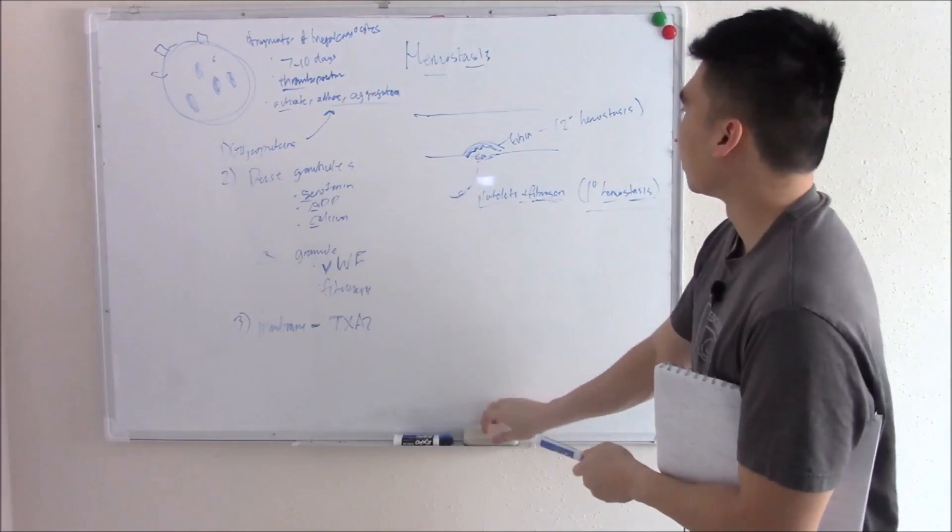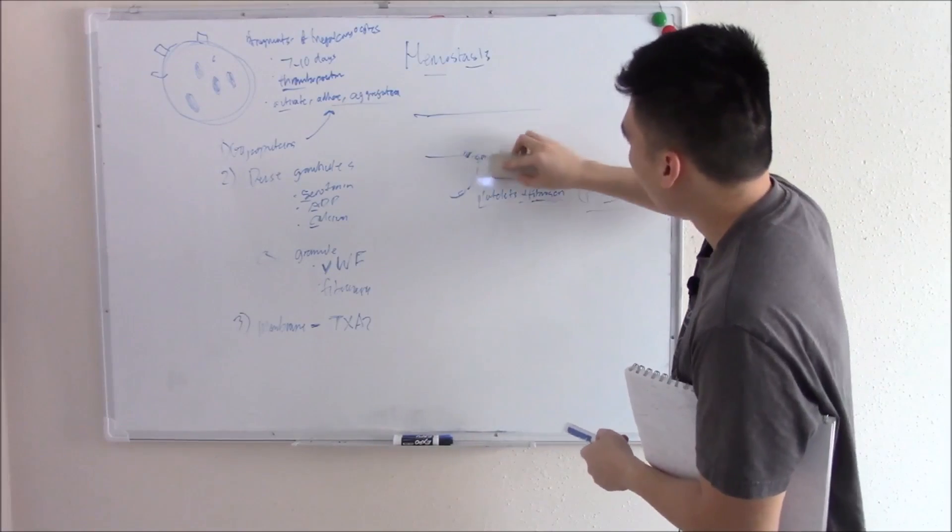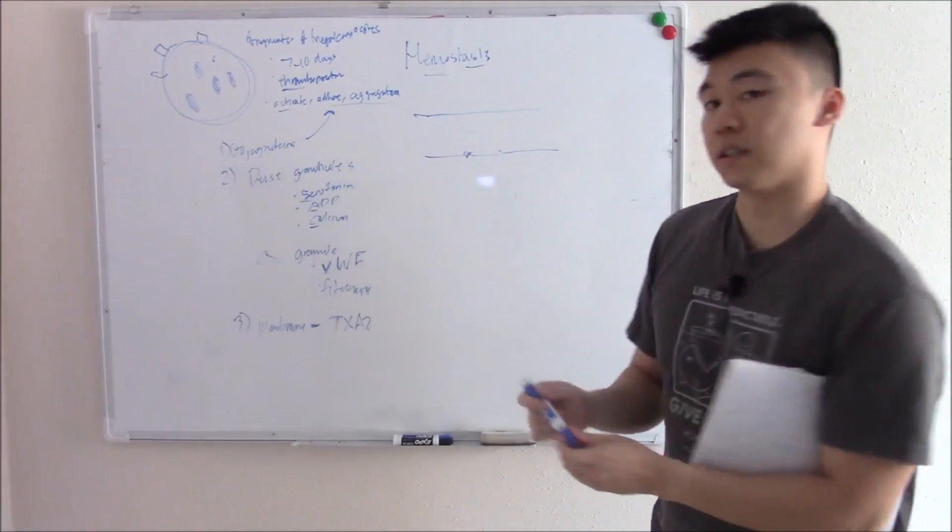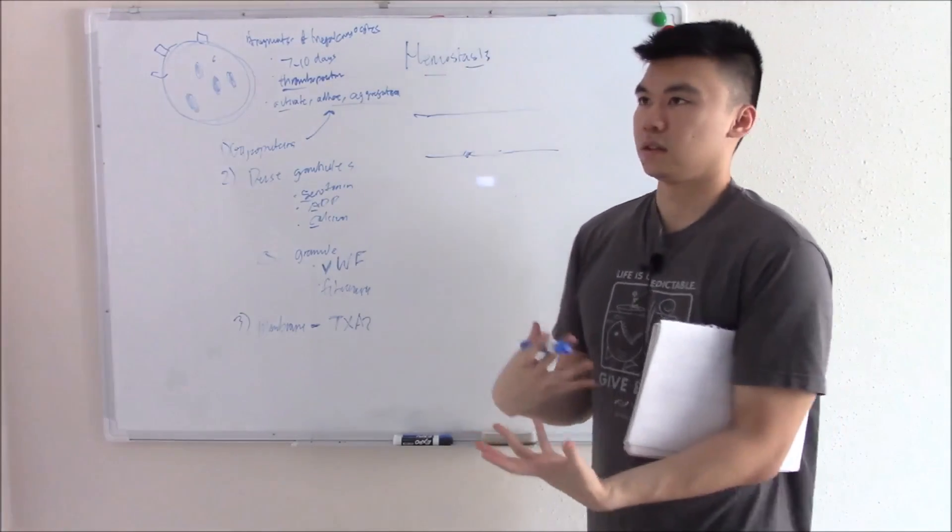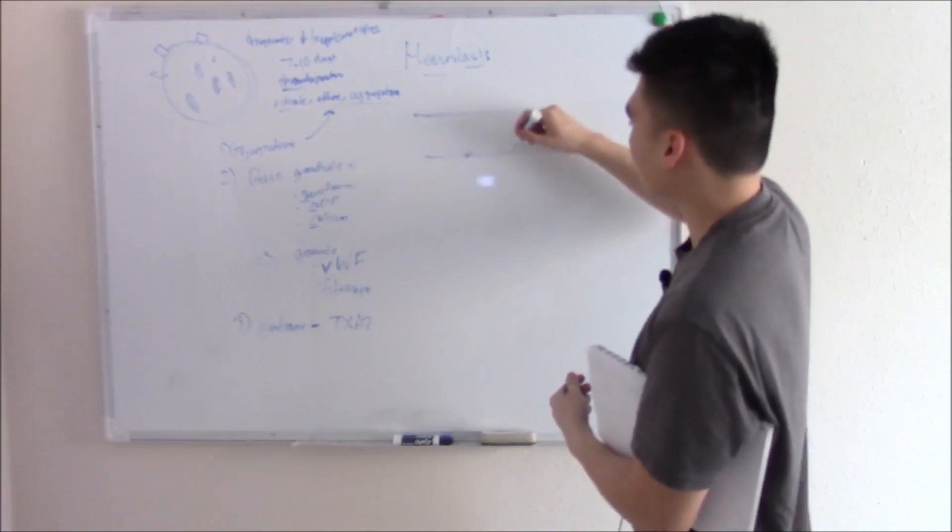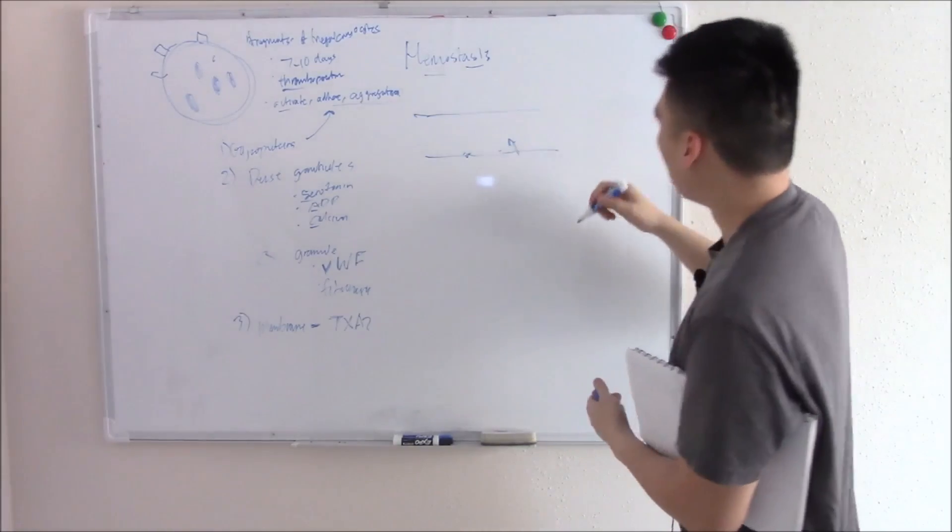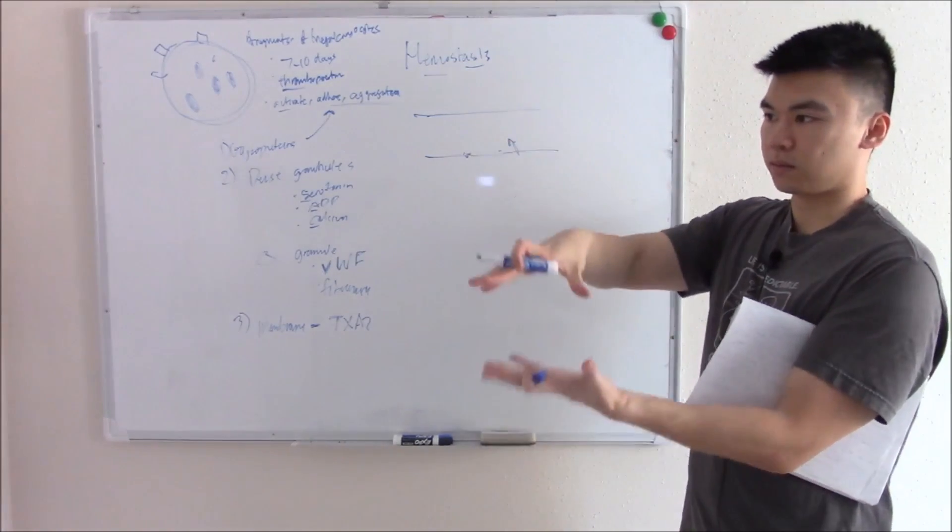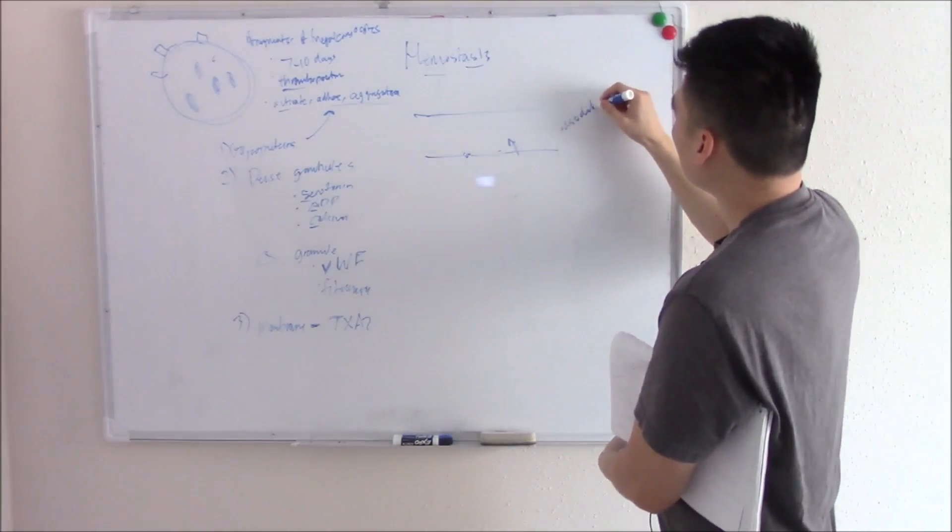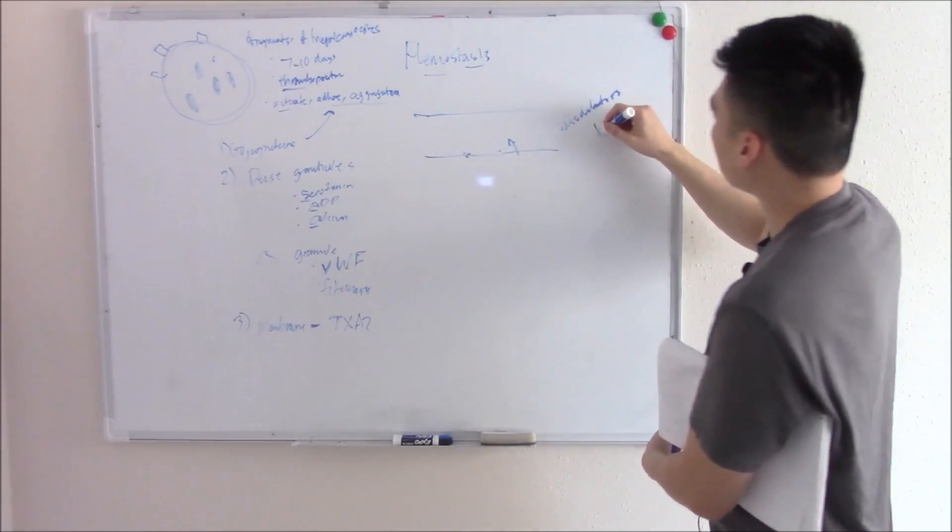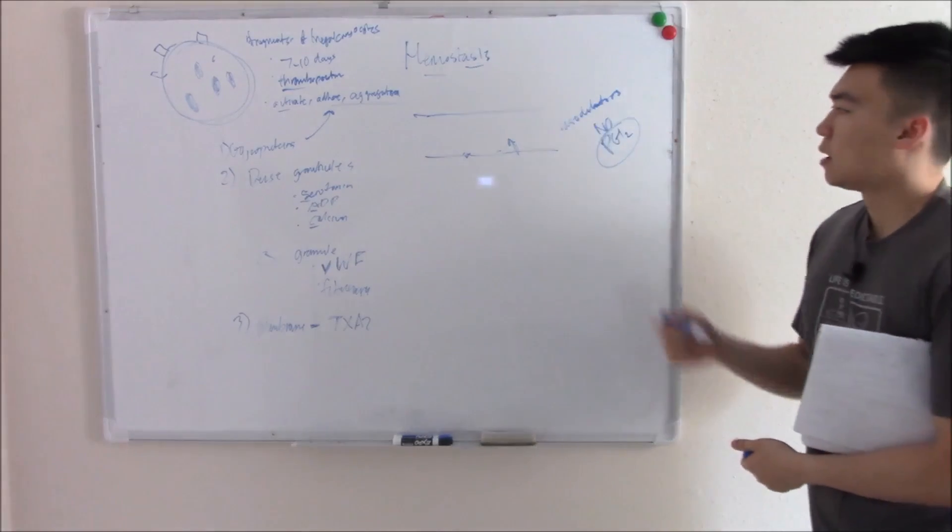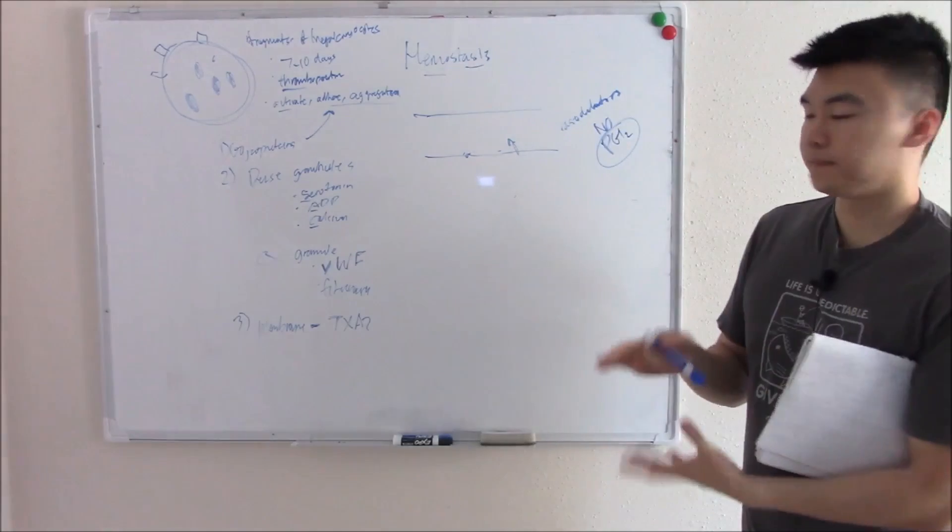In normal situations when we have a nice intact endothelium, we don't want plugs to form willy-nilly, otherwise we get clots and thrombies and MIs. In normal situations with intact endothelium, your endothelium stops aggregation by releasing factors including vasodilators to make your blood vessels nice and wide. These include things like nitric oxide and PGI2, that's a big one you should know.